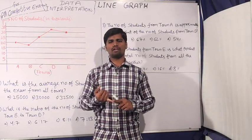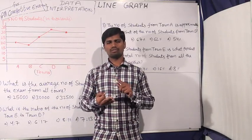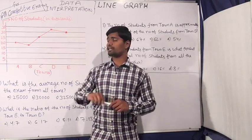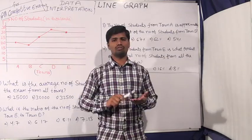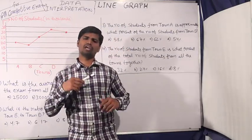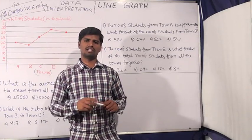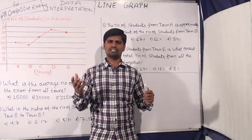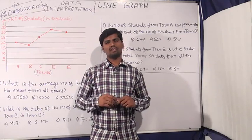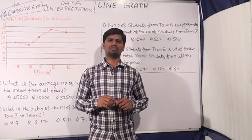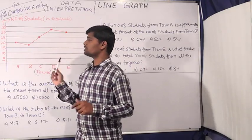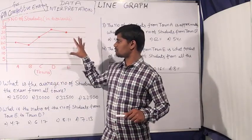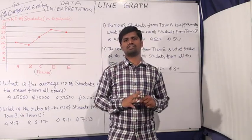First, pie graphs. Next, bar graphs. Next, line graphs. Next, tables. In this course, we will cover a few topics about data interpretation. We have 4 to 5 marks on data interpretation.